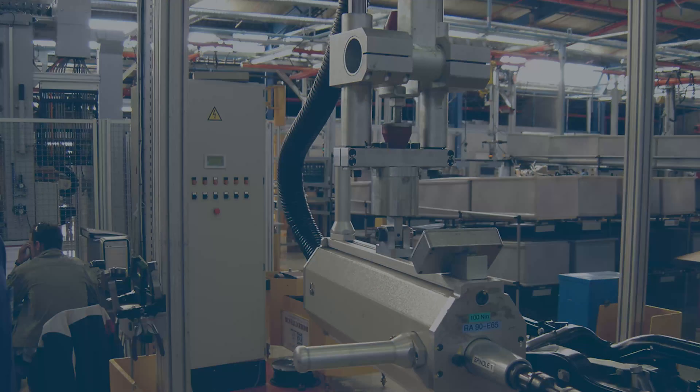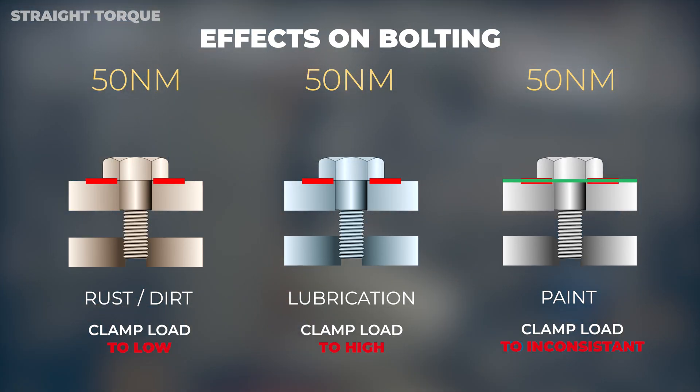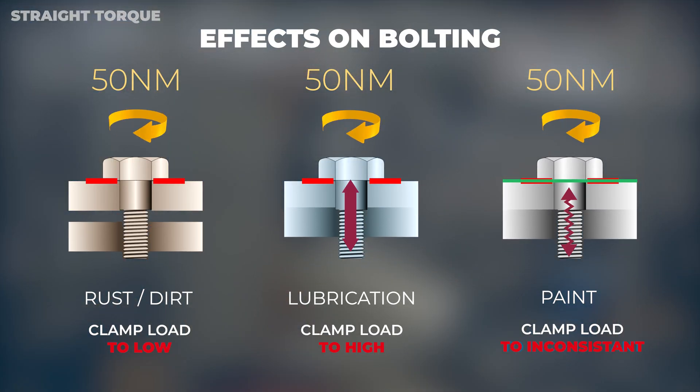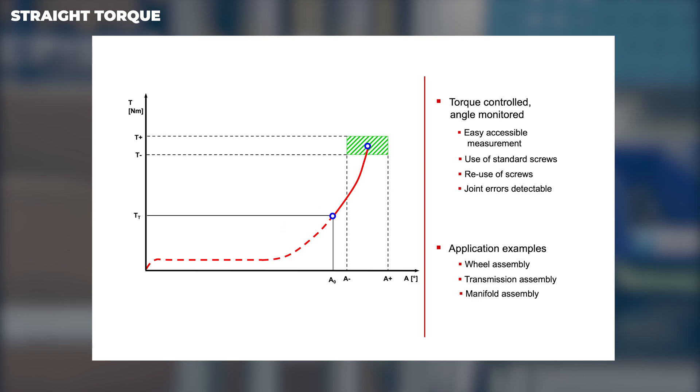The disadvantages of the straight torque strategy are that it does not consider influences such as underhead friction, dirt, oil, or even paint that might be around the bolt. Normally when straight torque is used, these bolts are oversized and torqued to a much higher value. This is to overcome the external influences of paint and underhead friction.